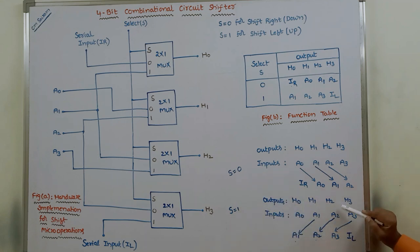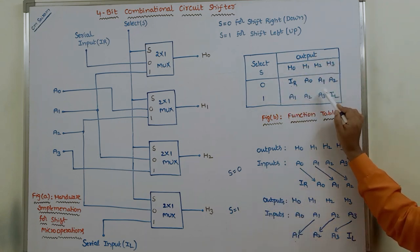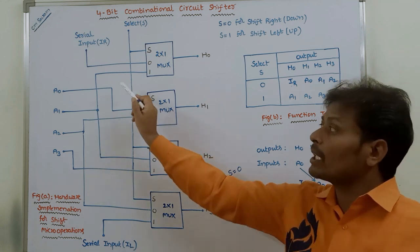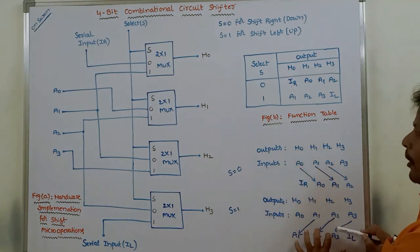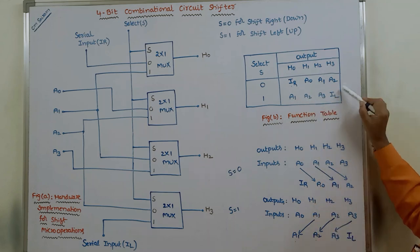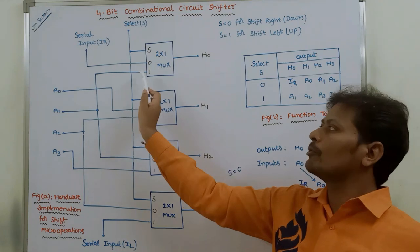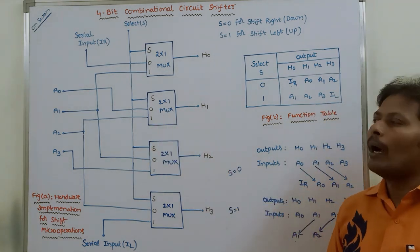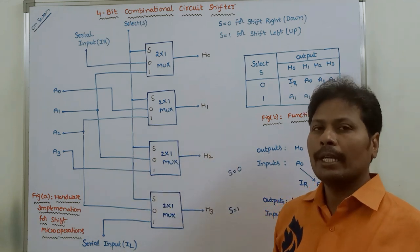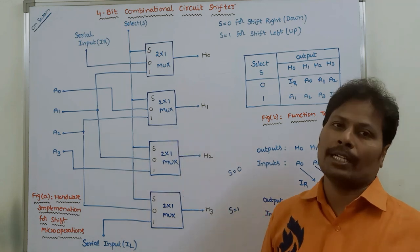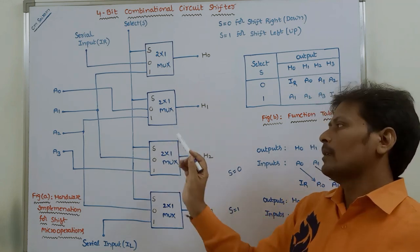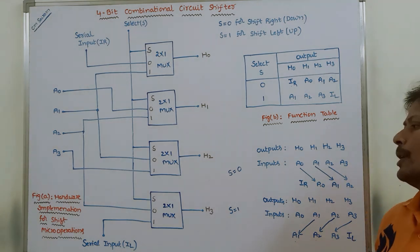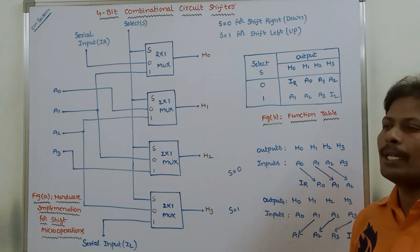By using this approach, we draw the function table first. Then, by using the function table, we make the connections of the 4-bit combinational circuit. Do not try to remember the connections directly. First perform the shift operation analysis, insert those values into the table, and then according to the function table, draw the connections between inputs and outputs. This guarantees correct connections.